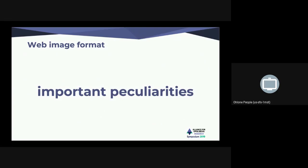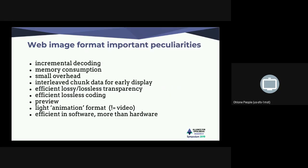A web image format has some peculiarities. When you come from a video codec, there are friction points that make the format not very suitable for image applications. What we learn from an image standpoint is that the things important for images but not adequately present in a video format are mostly incremental decoding. When consuming an image on the web, most of the time you don't have all the data — it's downloading — and you want to show as much as possible to the user even with only partial data. You have to architect your codec around incremental decoding, because you will be interrupted and won't have all the data.